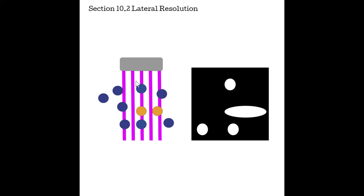In this example, we have the transducer beam coming down, and remember there is a width to the beam — starting wide, narrowing, then widening again in the far field. Depending on where those reflectors are within the width of the beam, if the beam intersects two at the same time, the machine cannot tell them apart. If the lateral resolution improves enough that a beam fits between them, the machine recognizes a reflector, then nothing, then another reflector — so it knows there are two. Axial resolution paid attention to reflectors sitting within the beam; lateral resolution looks at reflectors side by side and the minimum distance they need to be accurately displayed.